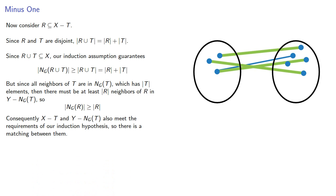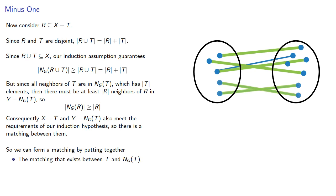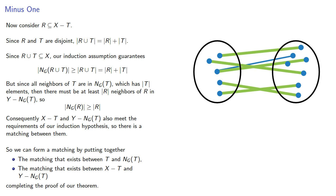We can form a matching by putting together the matching that exists between t and the neighborhood of t, and the matching that exists between x minus t and y minus the neighborhood of t, which completes the proof of our theorem.